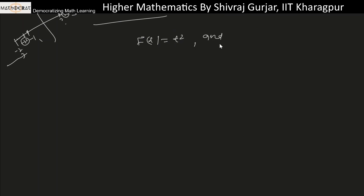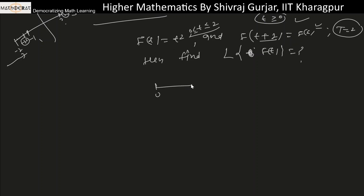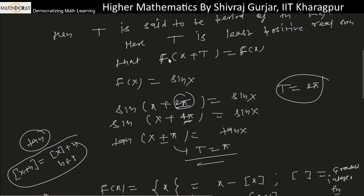Sometimes in a question they say: f(t) = t² and f(t + 2) = f(t), find the Laplace transform of this function f(t). The definition of this function is that f(t) = t² on [0, 2], and then the periodic definition is followed as t tends to infinity. So this will be a periodic function with period 2.